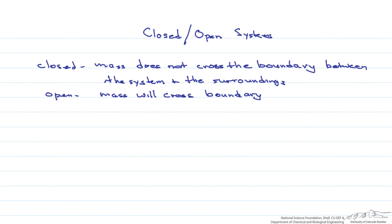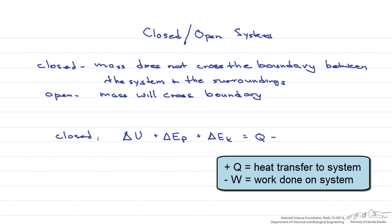So let's start with the governing equation for a closed system. Delta U, which is the change in internal energy, plus delta E sub P, which is the change in potential energy, plus delta E sub K, which is the change in kinetic energy, equals Q, which is heat, minus W, which is work.